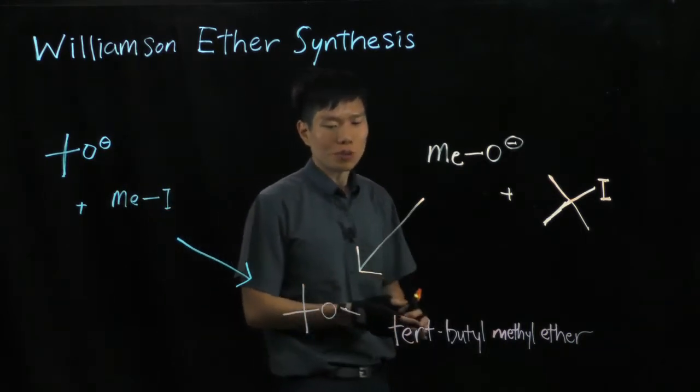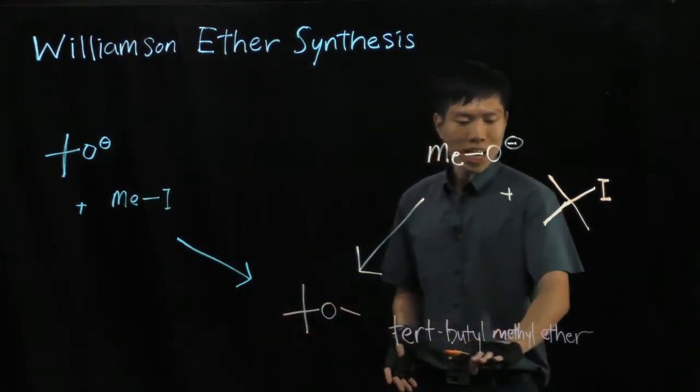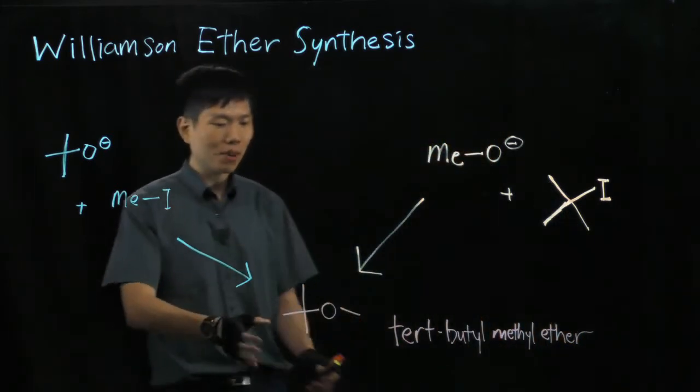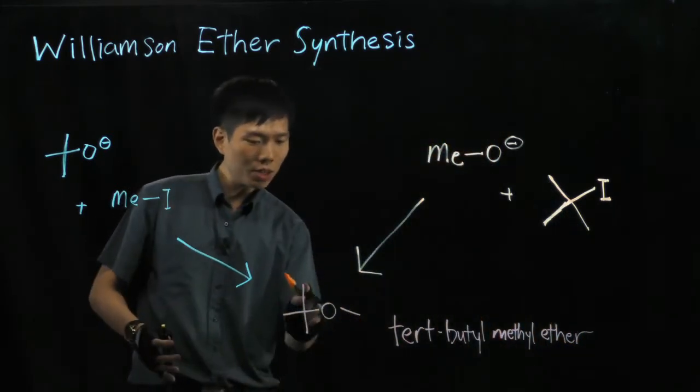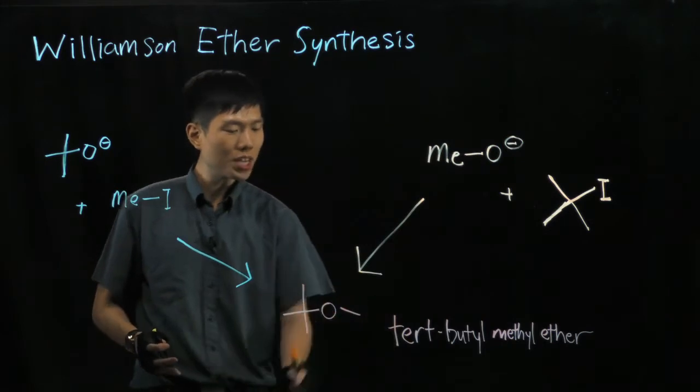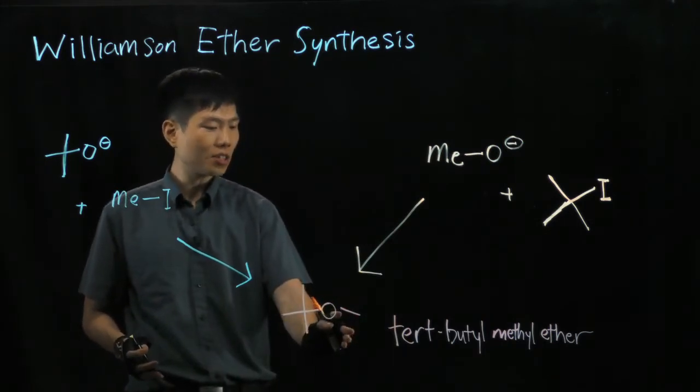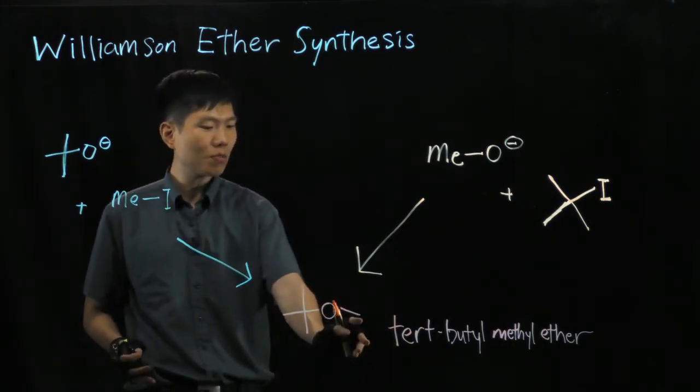Now suppose we want to produce this ether called tertiary butyl methyl ether. Structure looks like this. Recognize this skeleton structure here. 1, 2, 3, 4 butyl group tertiary. And on the other side of this oxygen is a methyl group. It ends with a carbon.